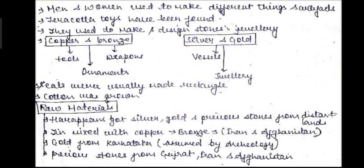Silver and gold were used to make vessels and jewellery. Seals were usually made in a rectangular shape. Cotton was grown there. Harappans obtained silver, gold, and precious stones from distant lands. Bronze was obtained from Iran and Afghanistan by mixing copper with tin. Gold was sourced from Karnataka according to archaeologists, and precious stones came from Gujarat, Iran, and Afghanistan.